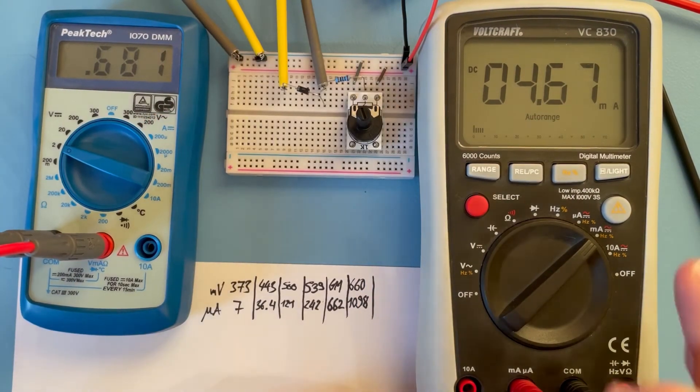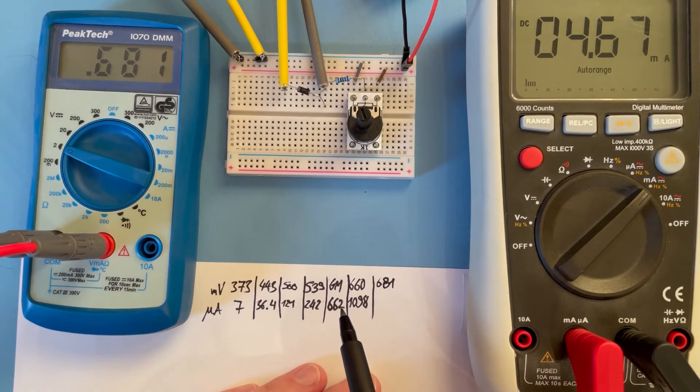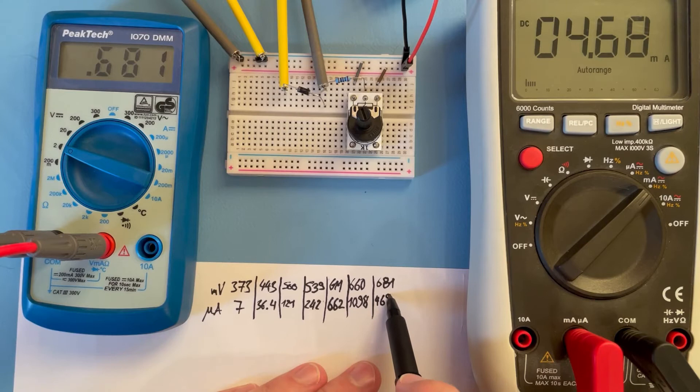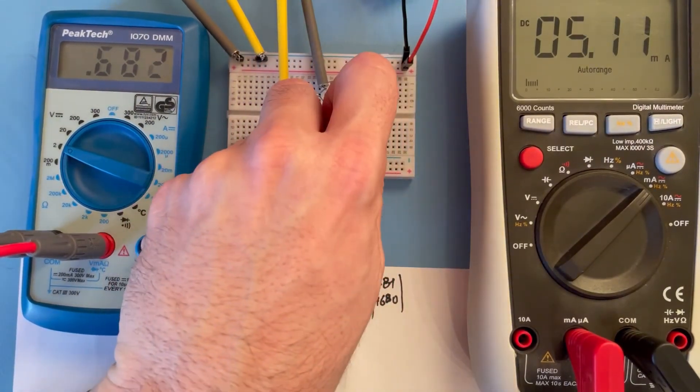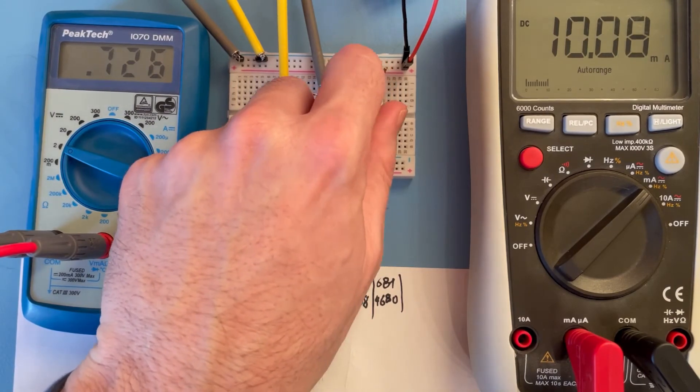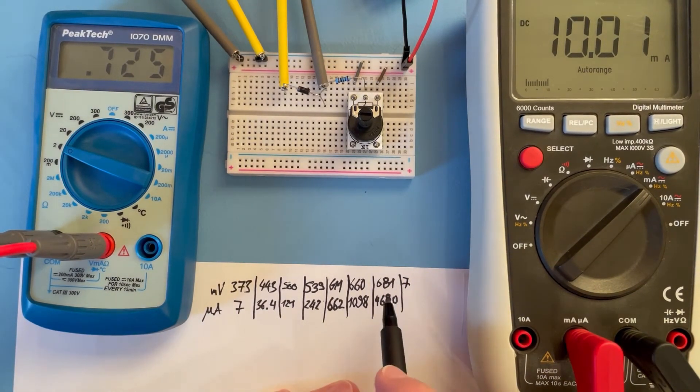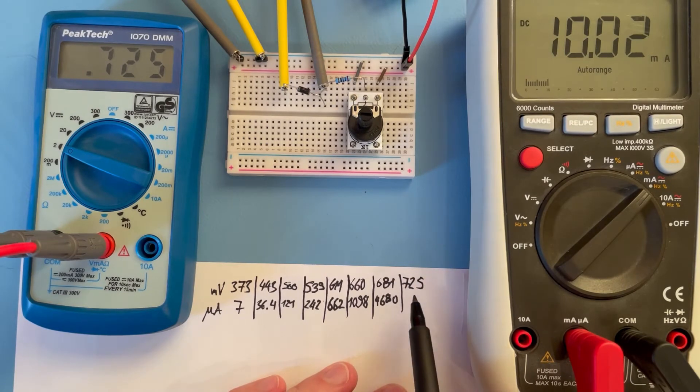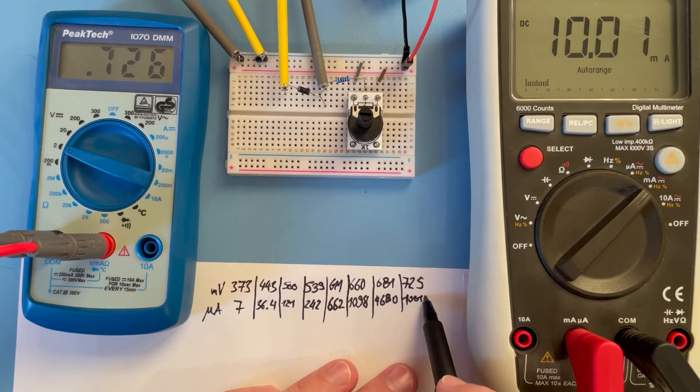Just one last one. We have 680, so we have 640 and 4680 microampere, which is 4.68 milliampere.